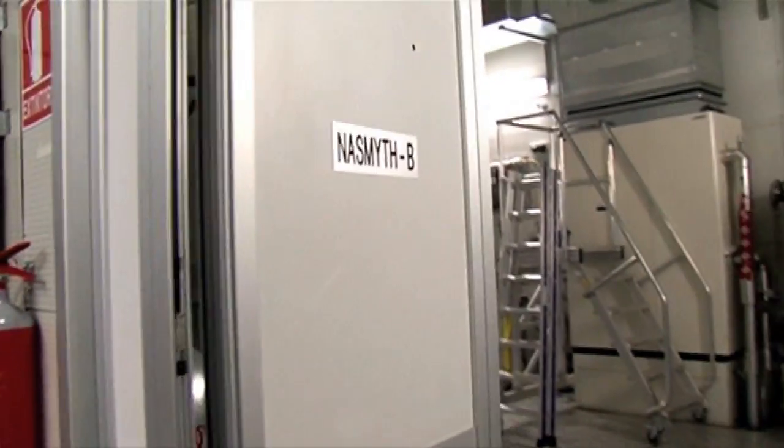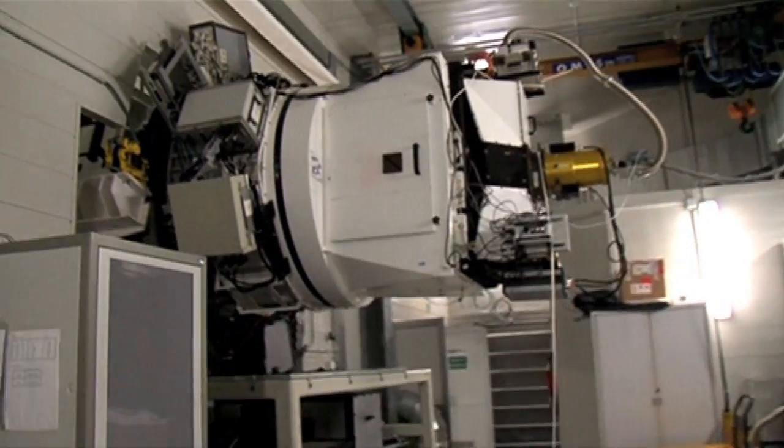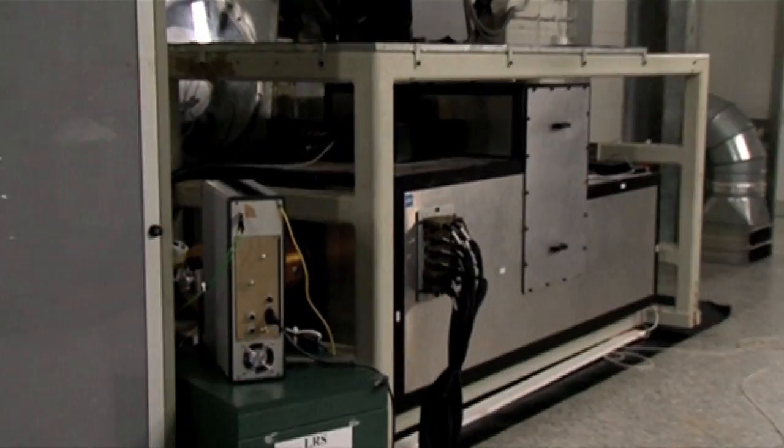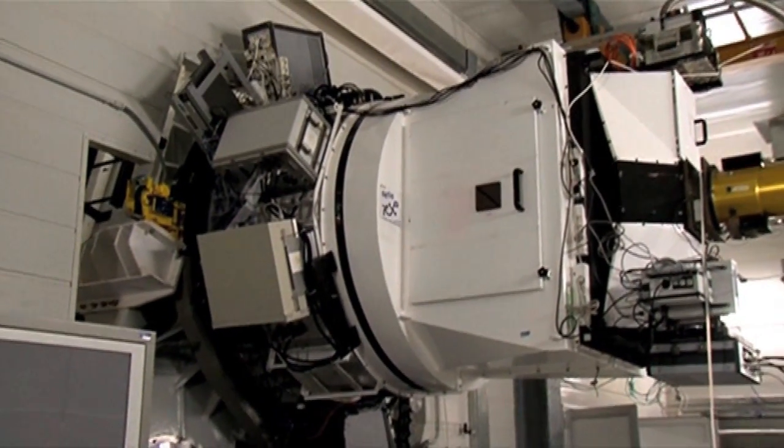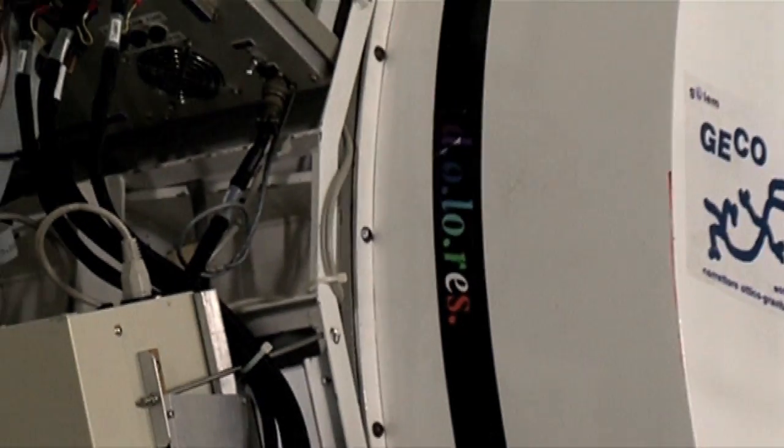And now, if we go through this door, Nazmuth B, this is one of the sides where the instruments are. Here are some of the instruments that actually measure the light off to the sides. There's one there, and there's one there. And astronomers are brilliant at naming their instruments. This one here is called Dolores. So that gets used if the light goes that way.